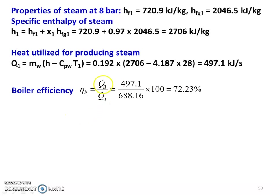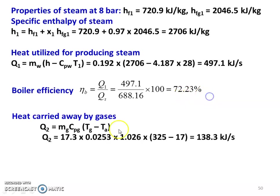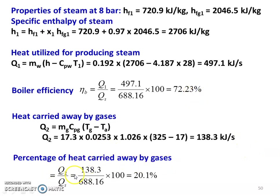Boiler efficiency: η_B = heat utilized for producing steam divided by heat supplied = 497.1 divided by 688.16 × 100 = 72.23%. Heat carried away by flue gases: Q_2 = M_g × C_pg × (T_g minus T_a) = 17.3 × 0.0253 × 1.026 × (325 minus 17) = 138.3 kJ/s. Percentage of heat carried away by gases = Q_2 / Q_s × 100 = 138.3 divided by 688.16 × 100 = 20.1%.